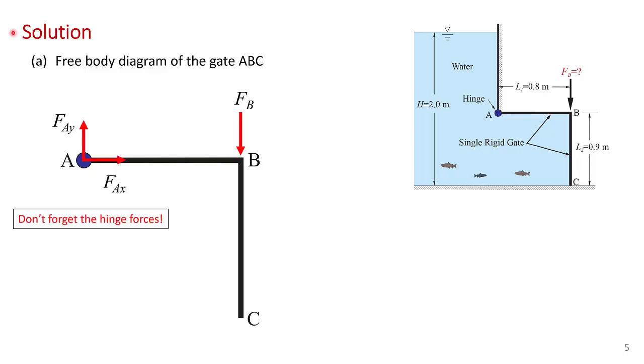So don't forget to put the hinge forces on the diagram. Indeed, that's why we will eventually take moments at the hinge at point A, because we don't know the hinge forces. We don't know FAX and FAY. And by taking moments at A where those forces don't have any moment, we can avoid calculating them.